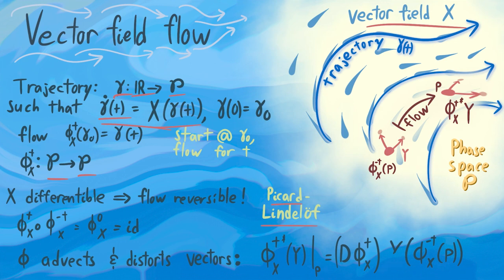So that means we can consider a flow of negative t — we can flow backwards in time. If I compose my flowing forwards in time with my flowing backwards in time, the times just add, so I just get back where I started — flowing at no time at all, staying in the same place. It's the identity.